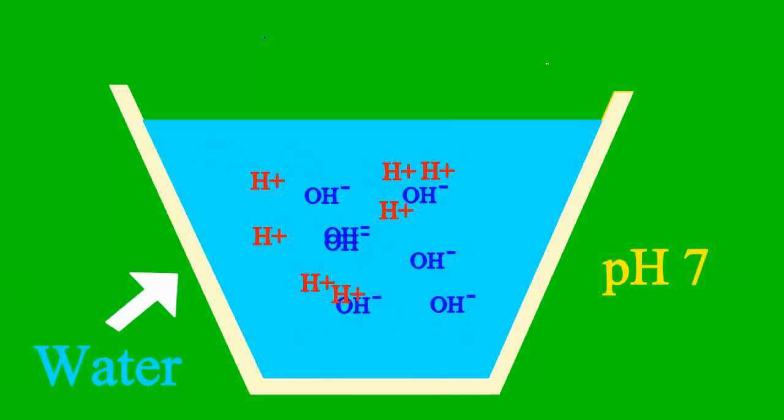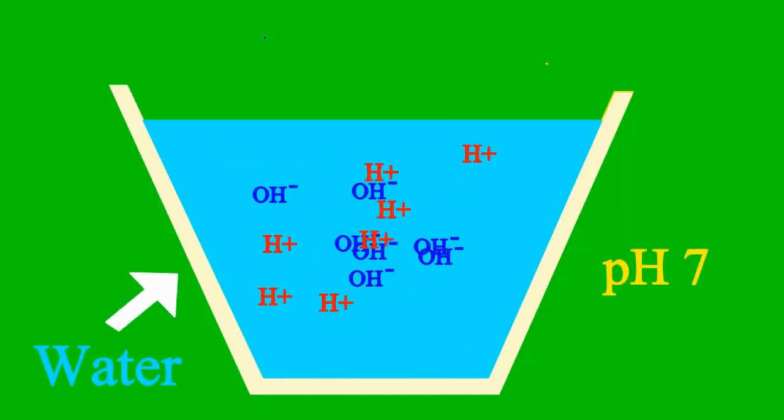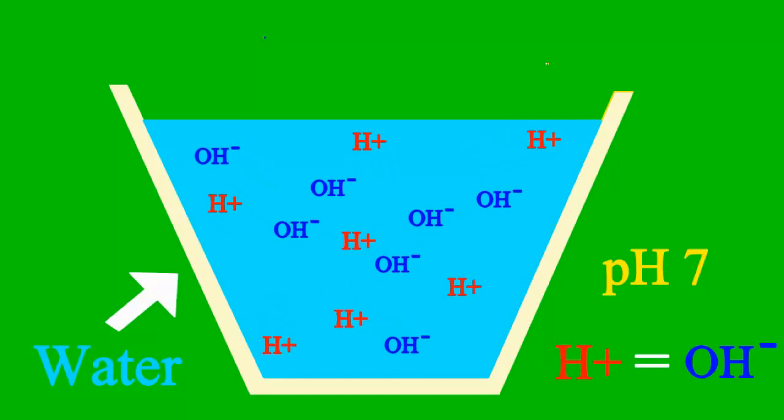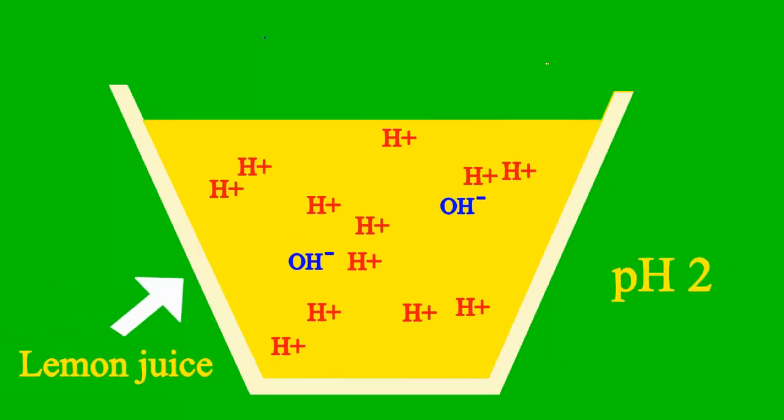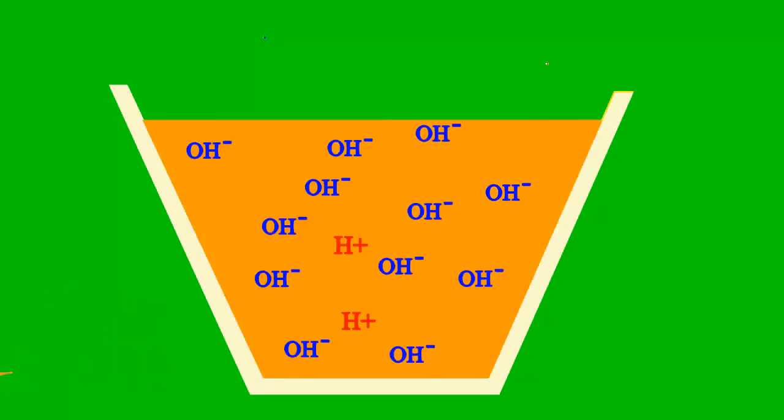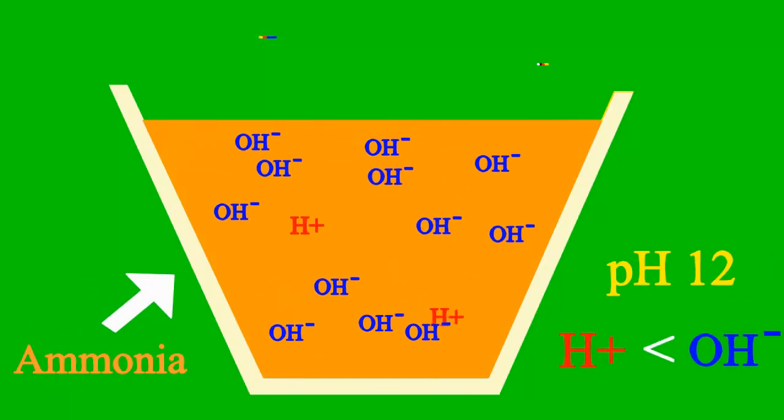When the pH is 7, then it's a case where the sample is neither acidic nor basic. But less than 7, it's acidic. More than 7, it's a base all the way.